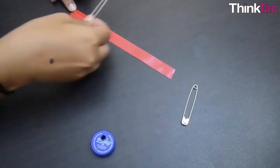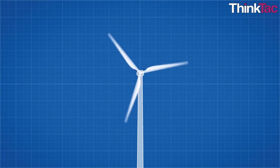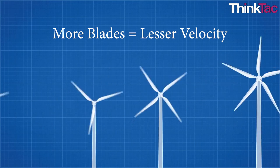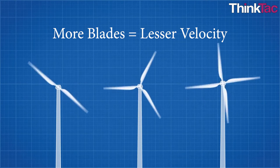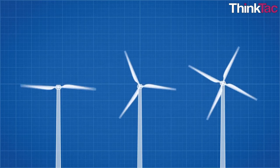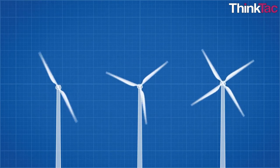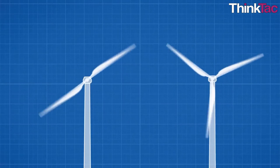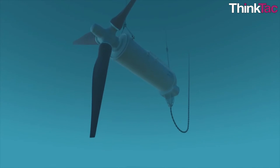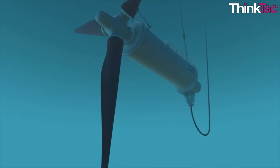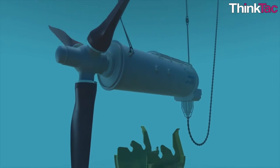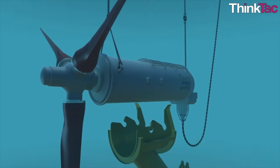While keeping the rest of the arrangement unchanged, we might find that increasing the number of blades actually slows the velocity of the blades. Since it is velocity that we are after, we find that the fewer the number of blades, the better. One blade and two blade turbines, though aerodynamically more efficient, suffer stability problems like wobbling. Hence, for practical use, three blade turbines are the most viable.